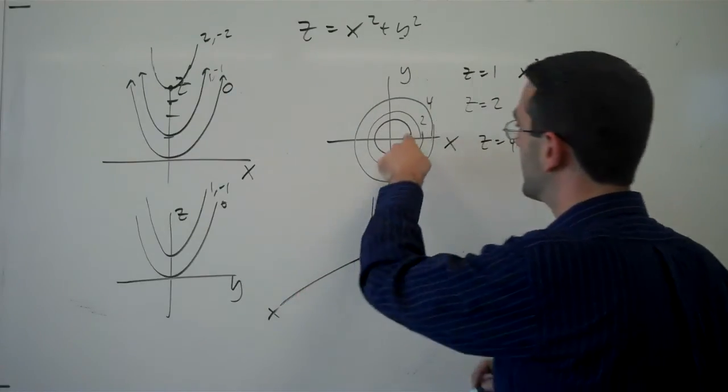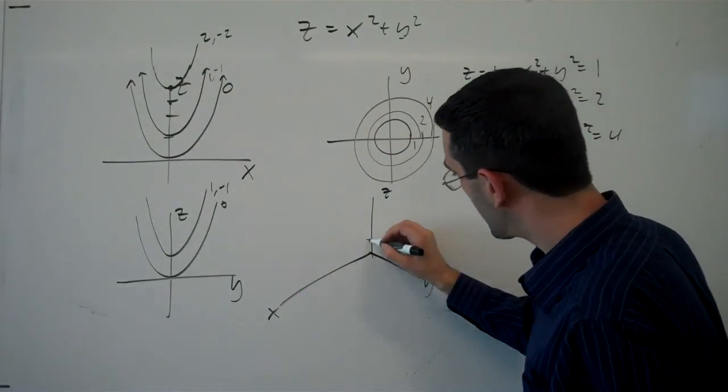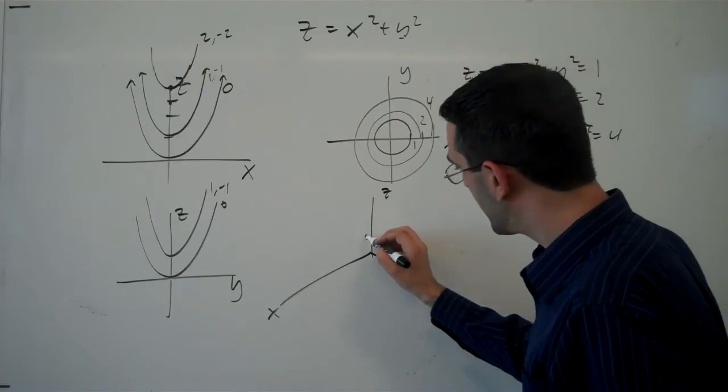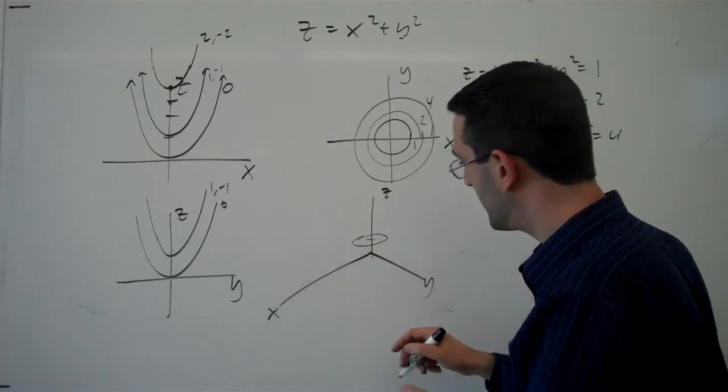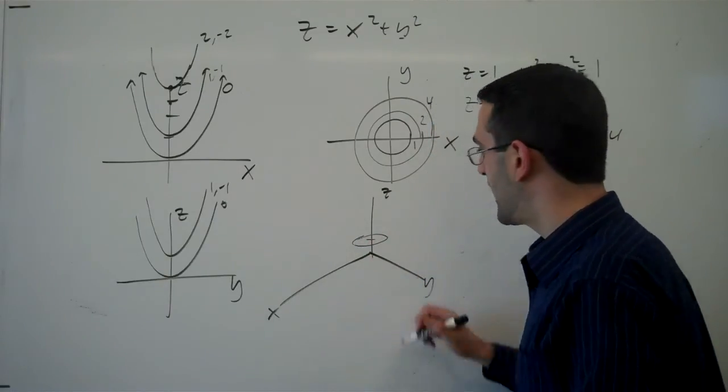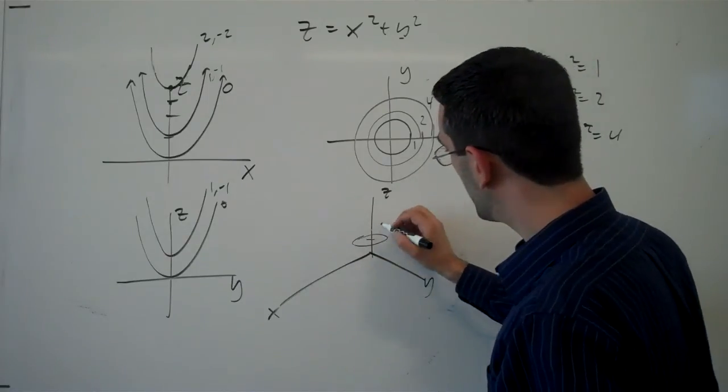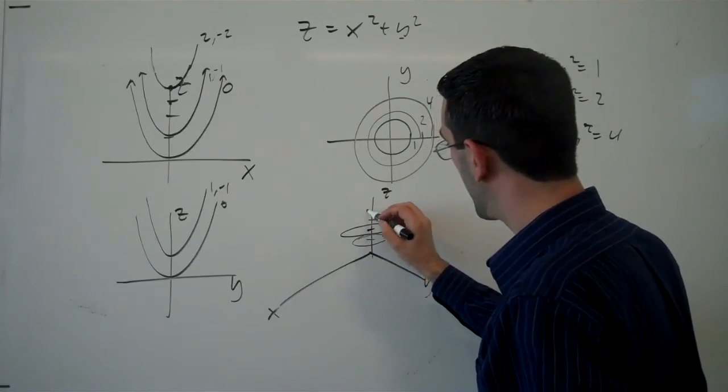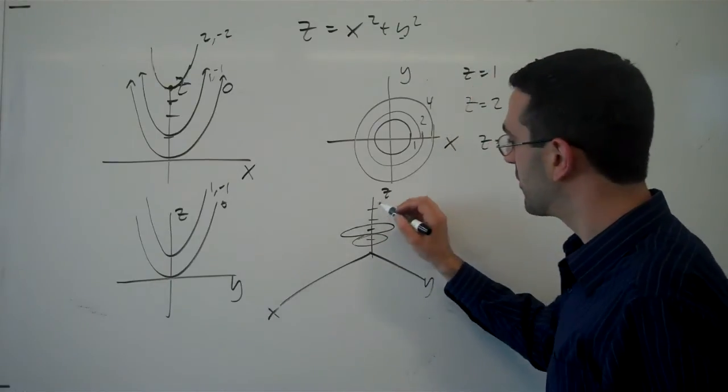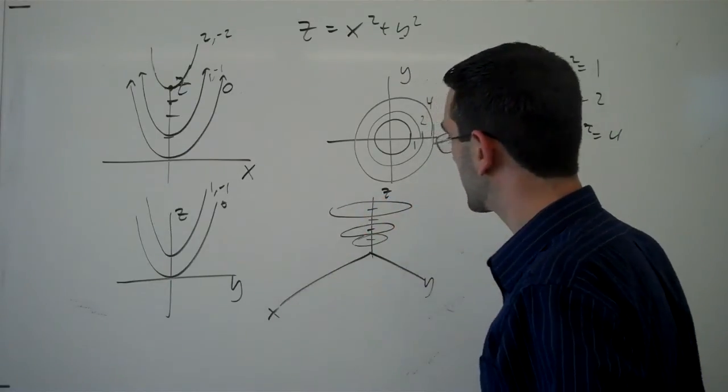And we might be starting to get some idea what this is going to look like. So this is telling me that at a z value of 1, I'm getting a little circle in the xy plane. At a z value of 2, I'm getting a slightly bigger circle. At a z value of 4, I'm getting a slightly bigger circle still.